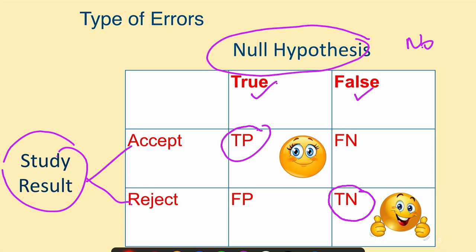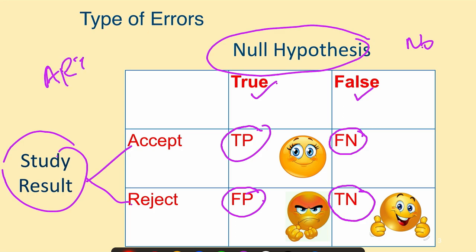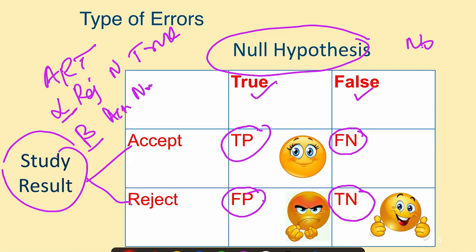We have two types of errors. When the null hypothesis is actually true but you still reject it, that is an error called alpha error or type 1 error. The second type, type 2 error or beta error, is accepting the null hypothesis when it is actually false — the false negative. You can remember this by the mnemonic ART: alpha error is rejecting the null hypothesis when it is actually true.